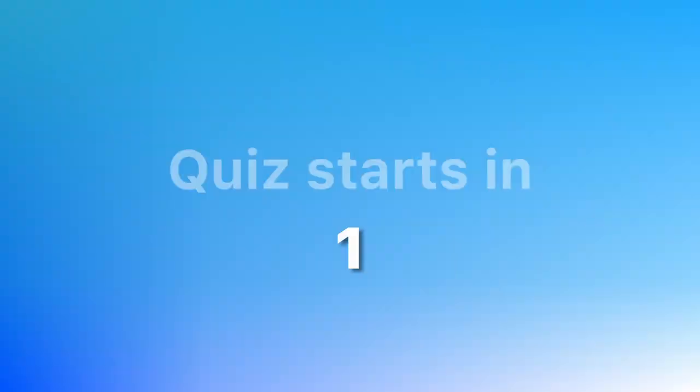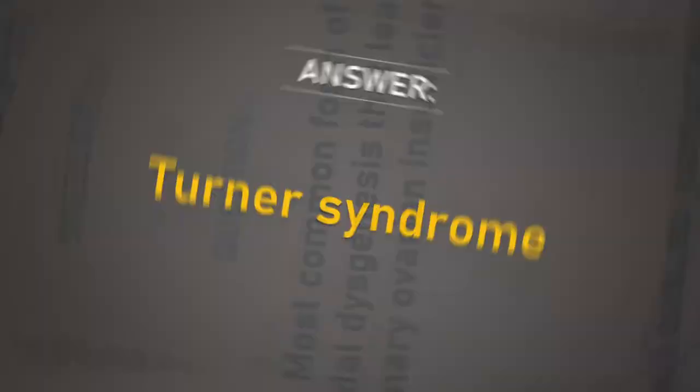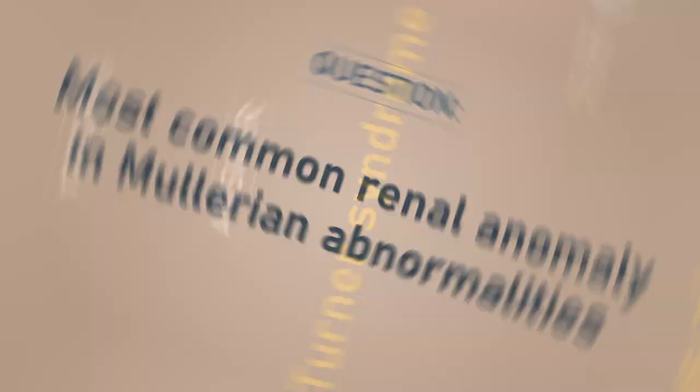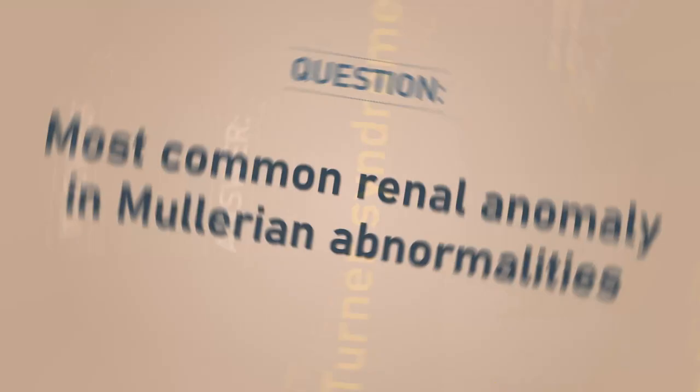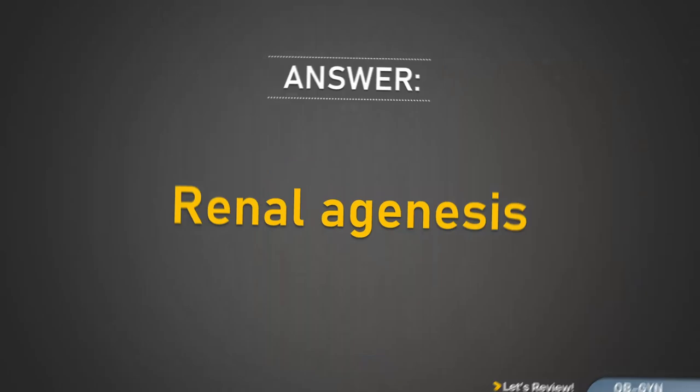Most common form of gonadal dysgenesis that leads to primary ovarian insufficiency: Turner syndrome. Most common renal anomaly in Müllerian abnormalities: renal agenesis.